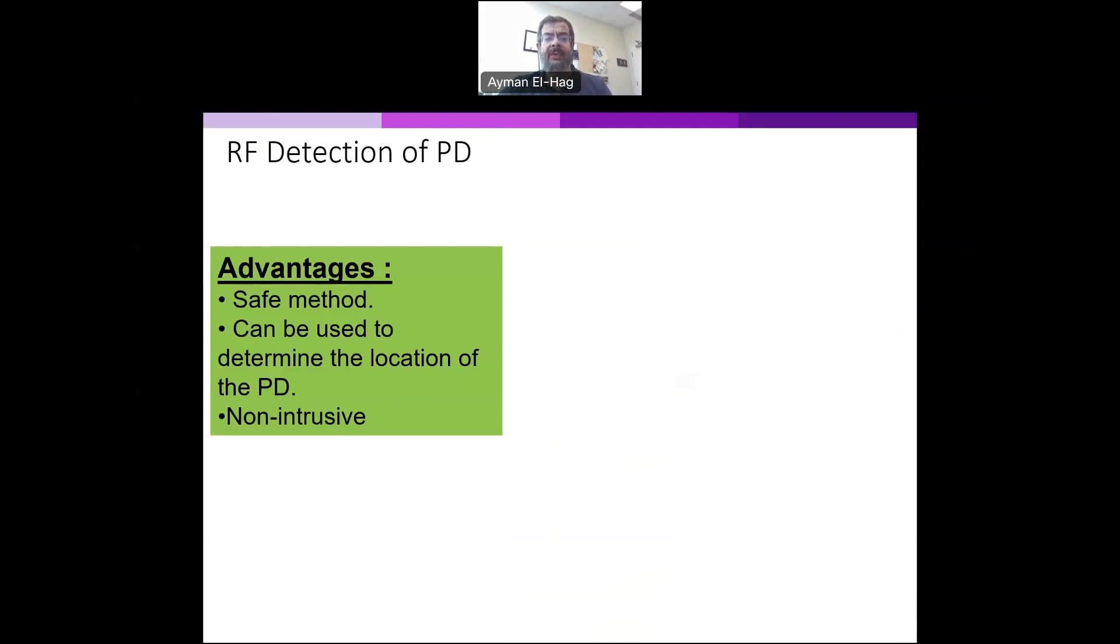Also, another advantage is it can be used to determine the location. If we use multiple antennas, because the partial discharge will arrive at these multiple antennas at different times, then we can localize the partial discharge location. And it's very non-intrusive.